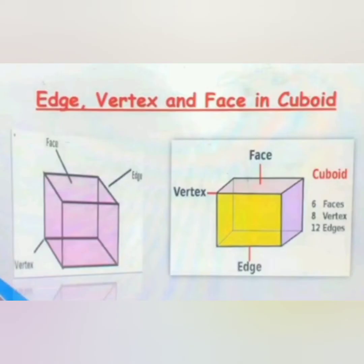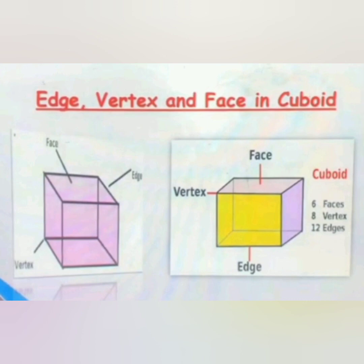In a cuboid you can see that there are total six faces, eight vertices, and twelve edges. You can find this out yourself — take a cuboidal box and count the faces, edges, and vertices to verify the numbers.